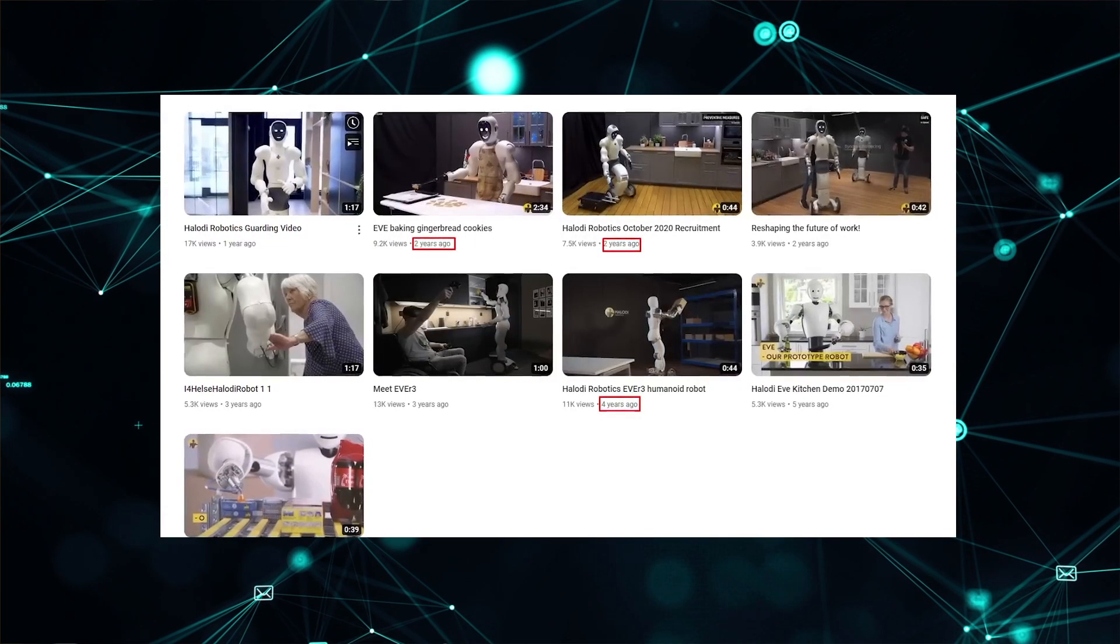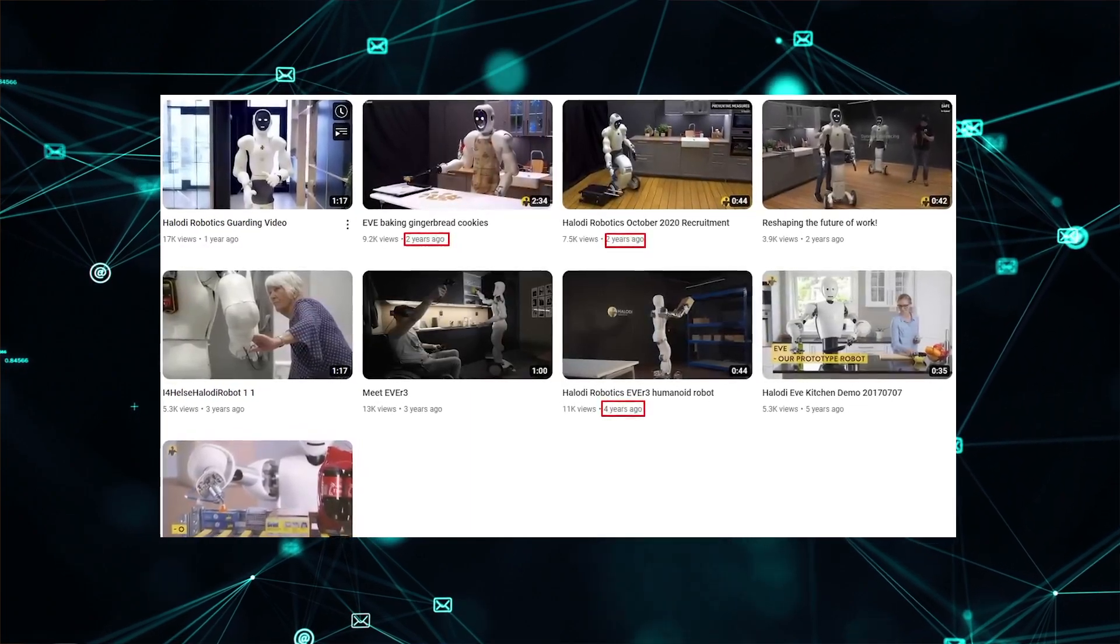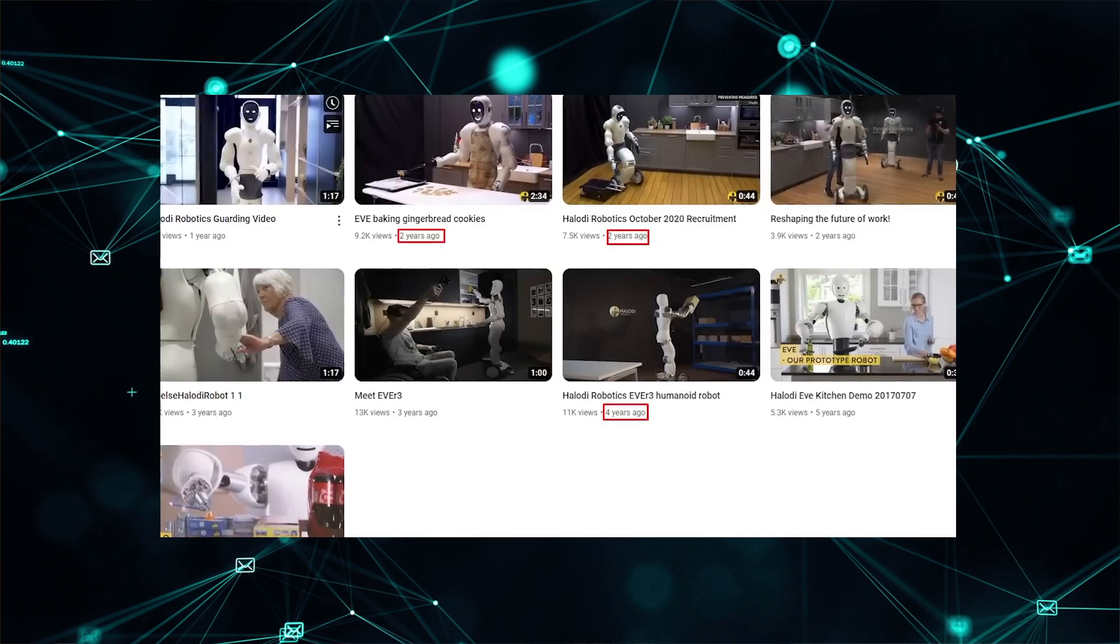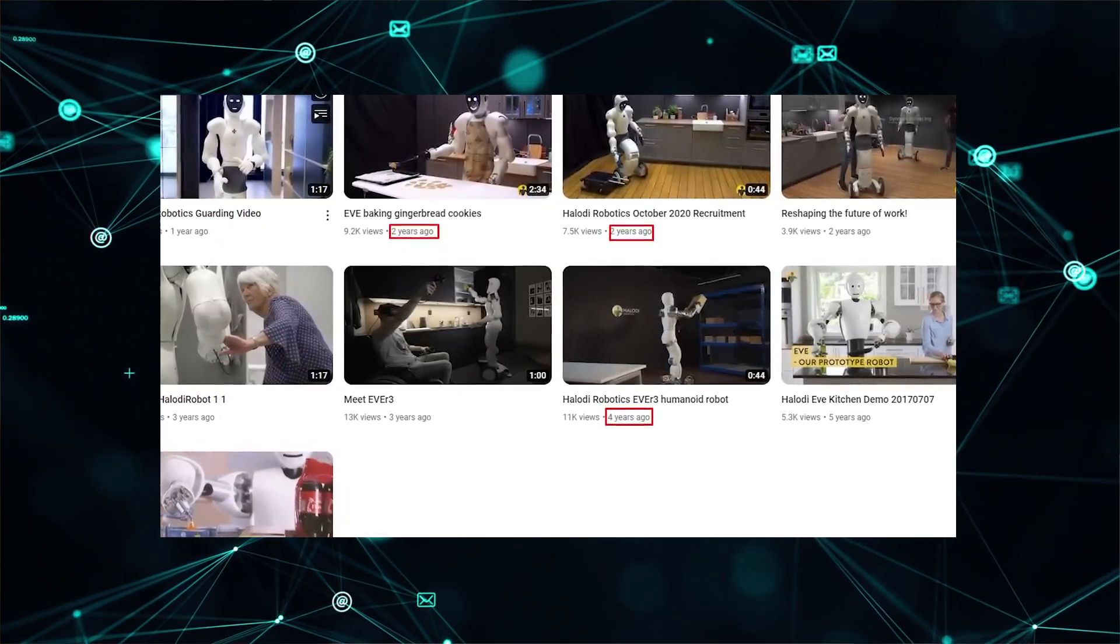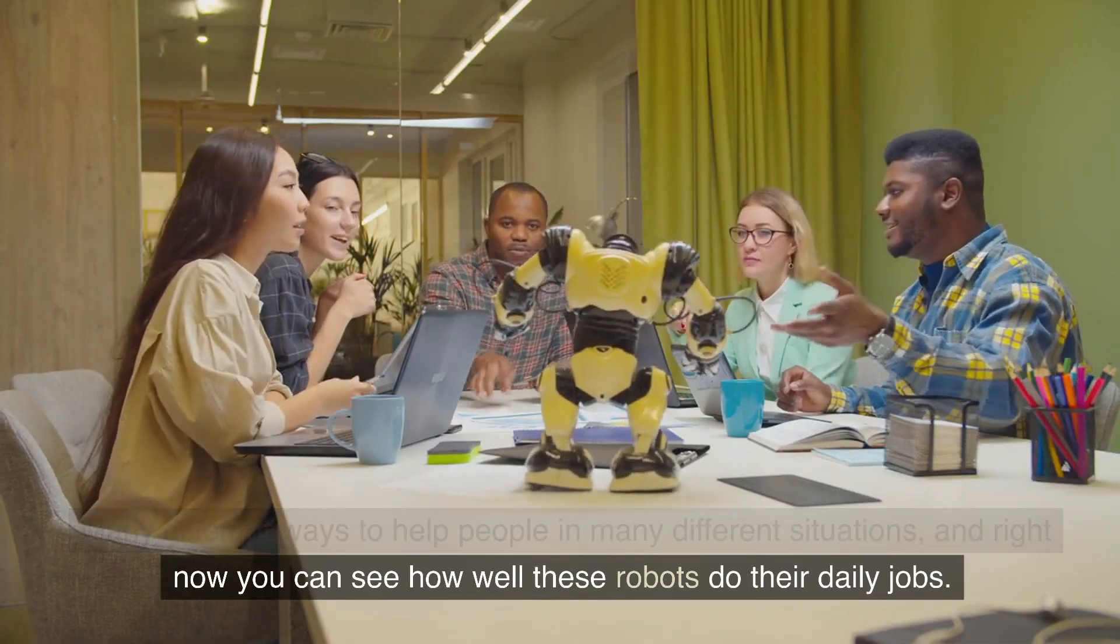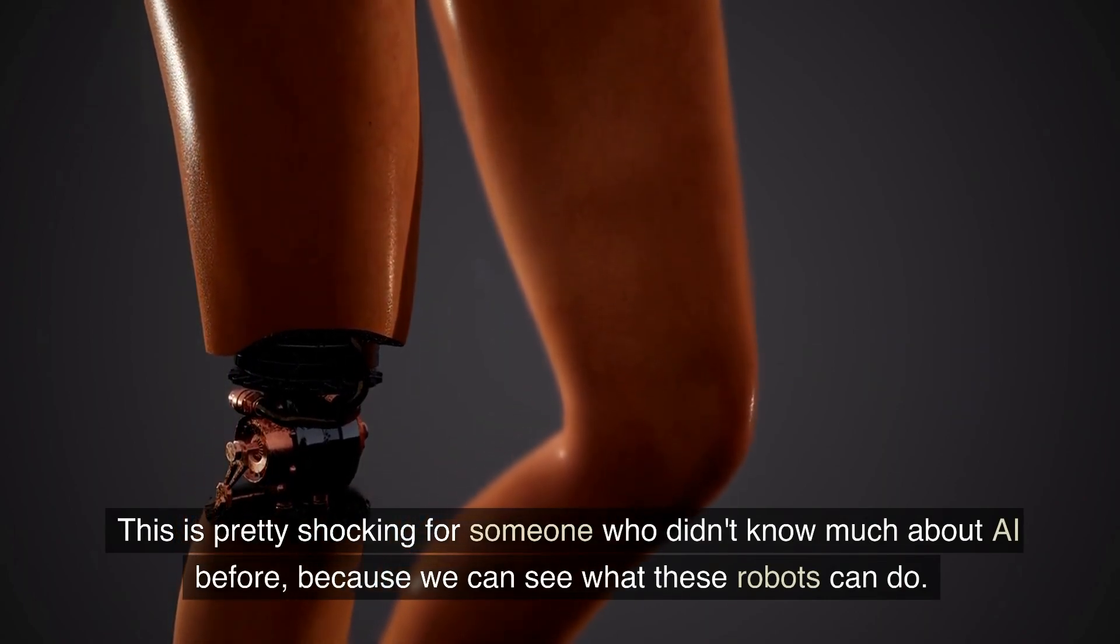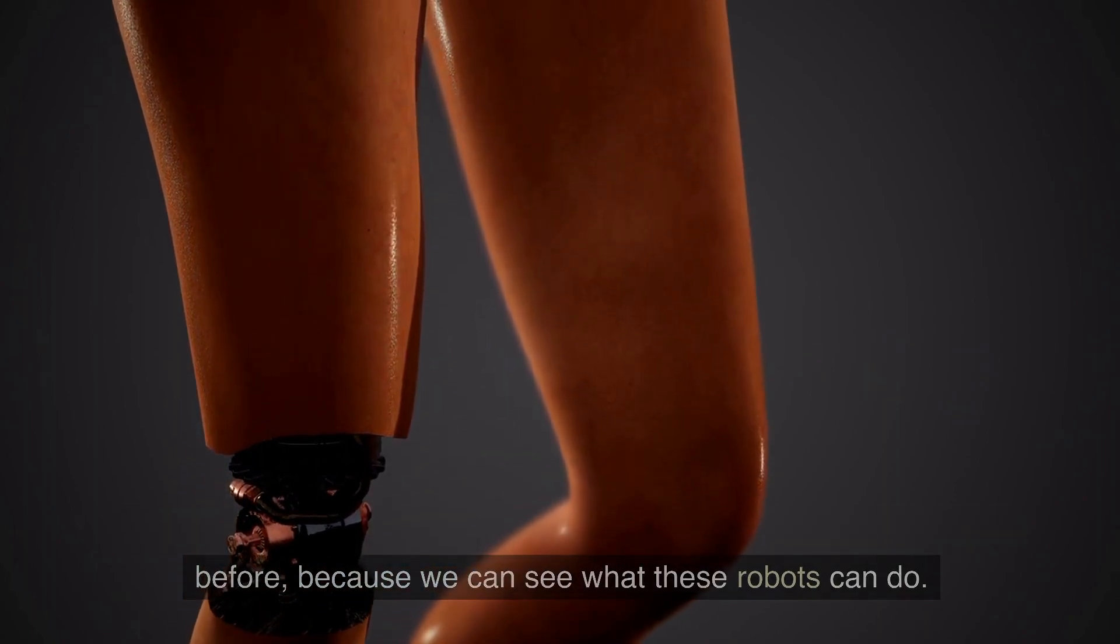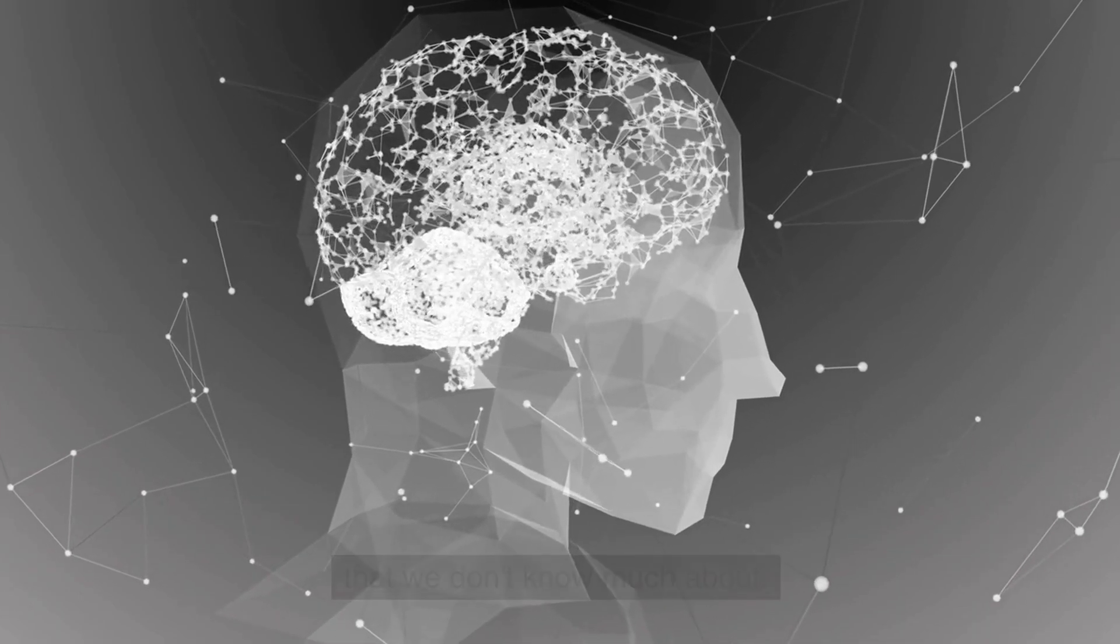If we look at their YouTube channel, we can see that some of the robots that are very good at what they do were released years ago. Two years ago, three years ago, five years ago, these robots were moving very effectively in the real world in many different ways to help people in many different situations, and right now you can see how well these robots do their daily jobs.